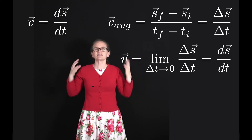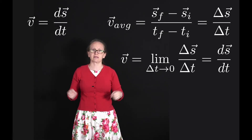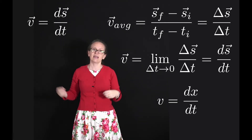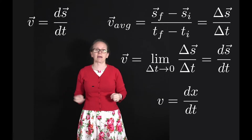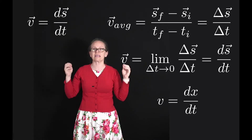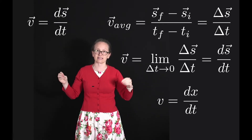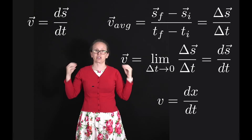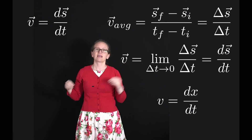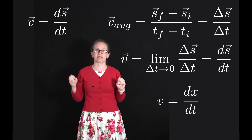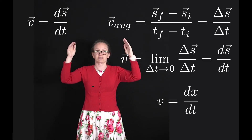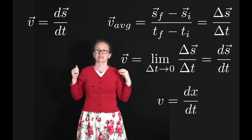Sometimes you'll see this written as v equals dx/dt. It's written this way if an object is just moving along the x-axis — in this case the velocity is just the change in displacement along that x-axis. It's also written this way if we're considering the different dimensions separately.